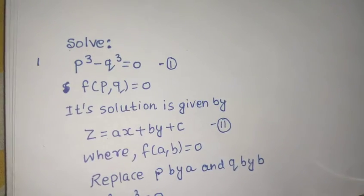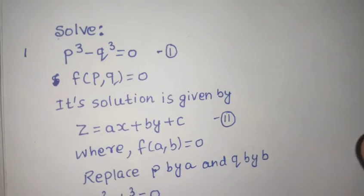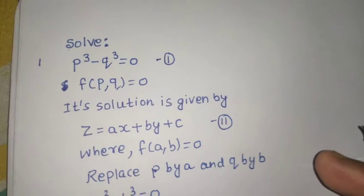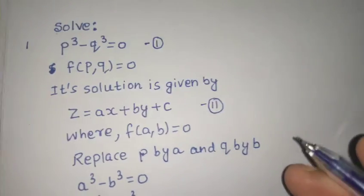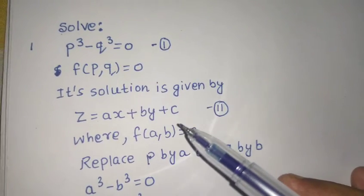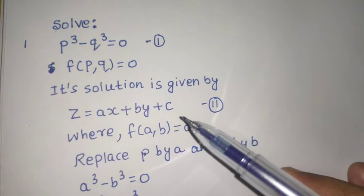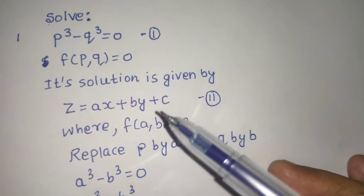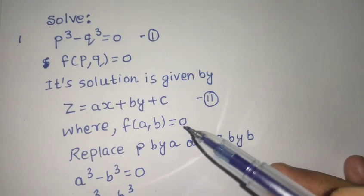I hope you learned something from the video. This was a function completely of P and Q. Whenever you get such type of functions, we solve like this. We know that solution is Z = AX + BY + C. The only thing we have to do is write either A in terms of B or B in terms of A.